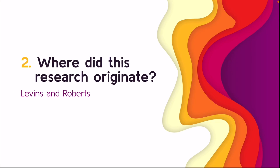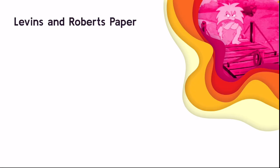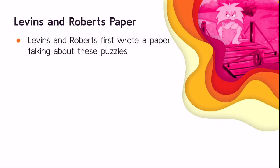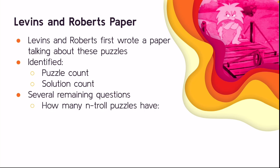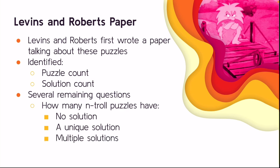So where did this research originate? We based it off a paper by Levens and Roberts, which was the first we found discussing these puzzles. They identified the puzzle count and solution count for the classic variation, and left open questions at the end of their paper — including how many neutral puzzles have no solution, a unique solution, or multiple solutions.